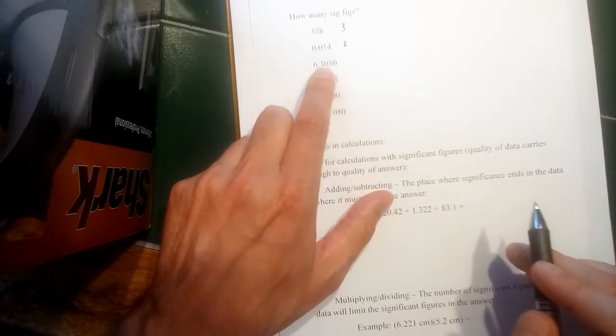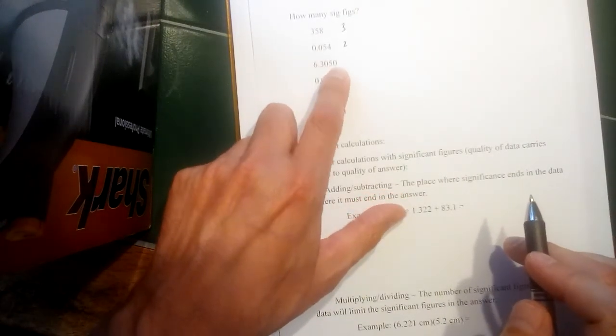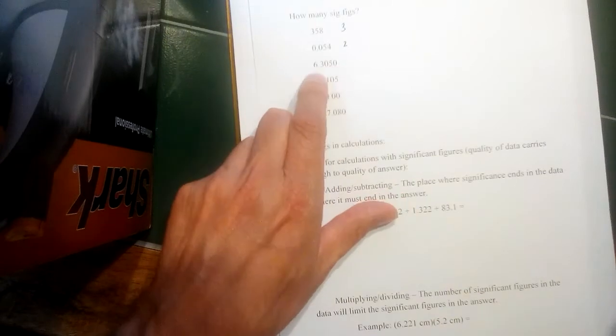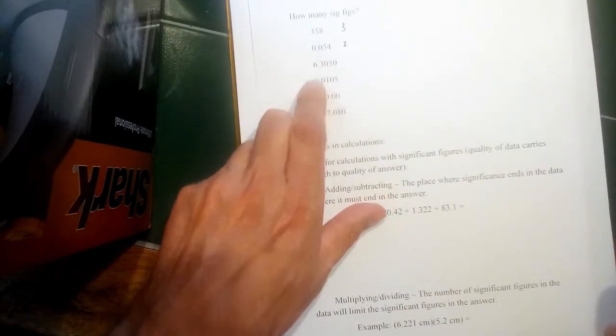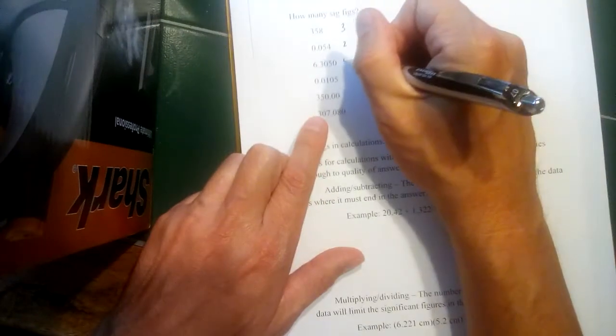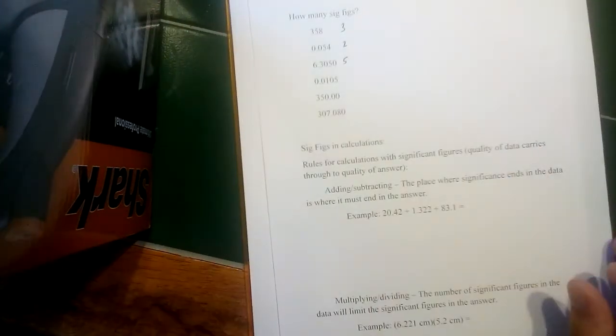6.3050, we've got a trapped zero and then a zero to the right, but the number has a decimal place in it. So that zero is going to count as well. So all five of those digits would count as significant figures.